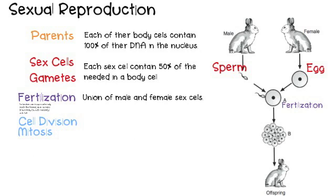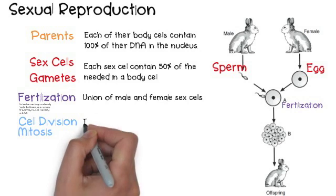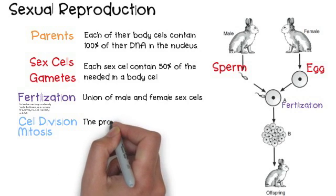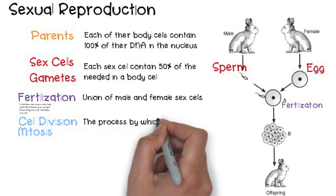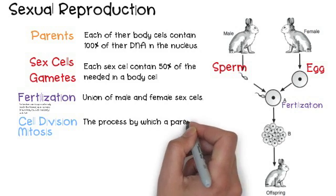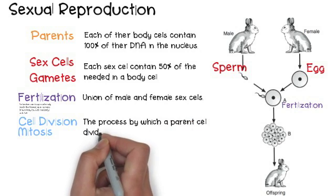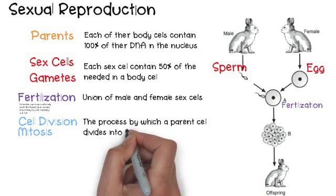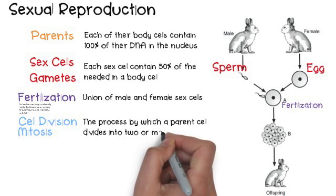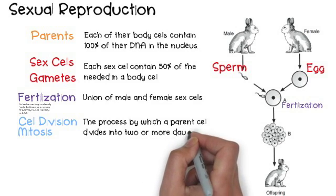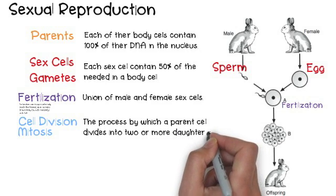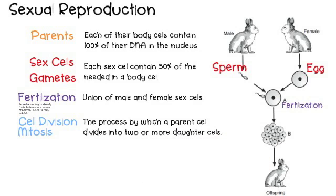Now let's talk about cell division — meiosis. What happens once the DNA combines to get 100% of it? Well, the cells begin to divide, and that one parent cell divides into two daughter cells.